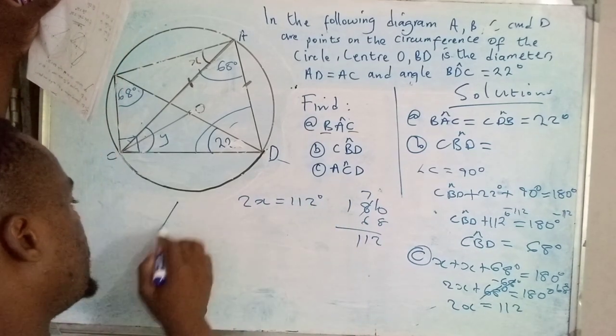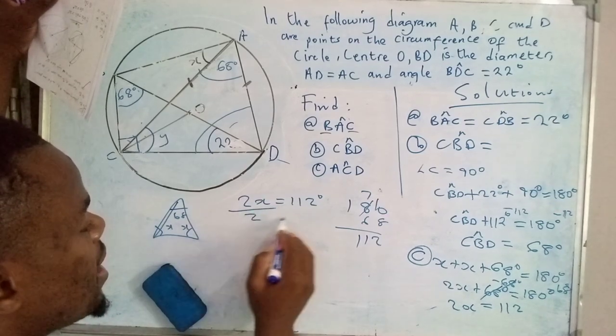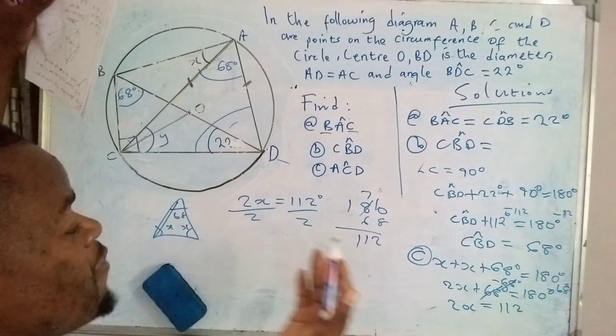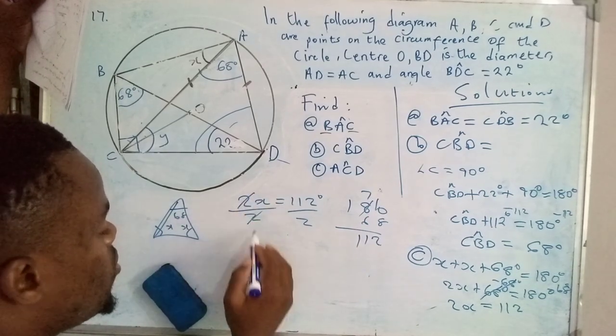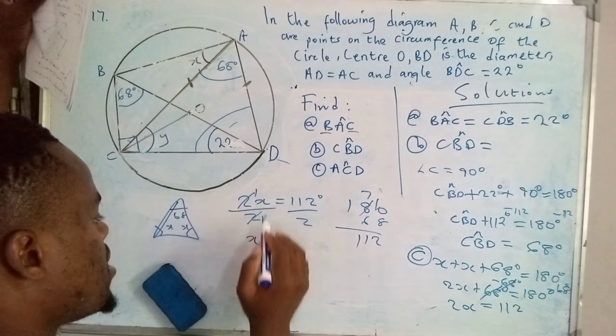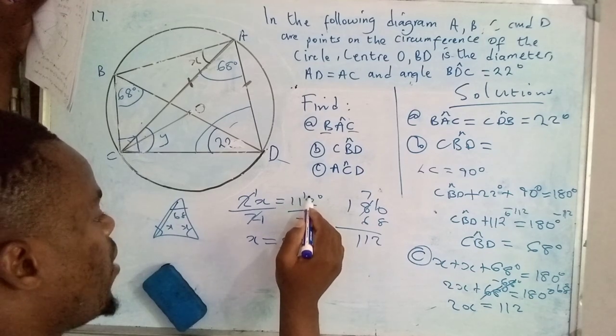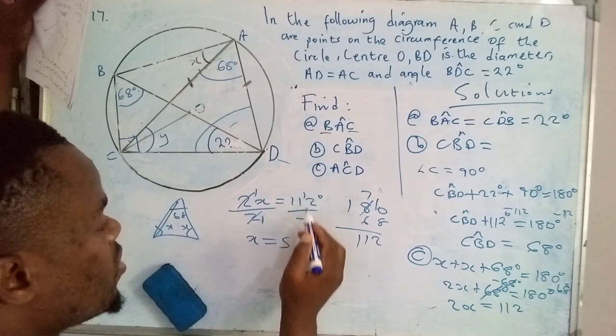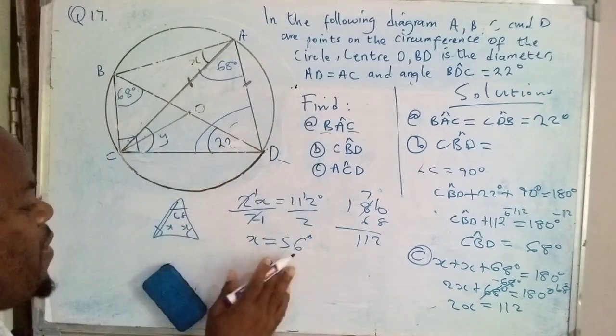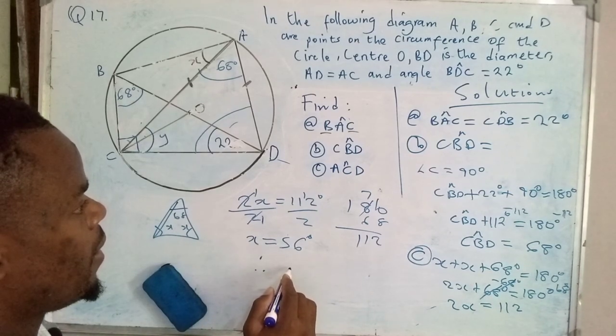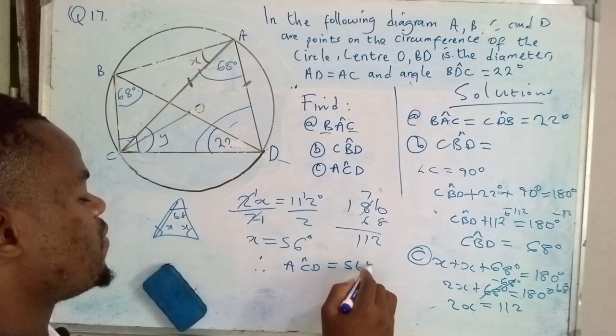So 2X equals 112 degrees. Our interest is to find the value of X. How do we go about this? We have to divide both sides by 2. So this 2 and that 2 cancel: 1 times X is X. 2 into 11 is 5, remainder 1. 2 into 12, when you add that 1 to 2 that's 3, so 2 into 12 is 6. So that is 56 degrees. Therefore, the angle here, which is ACD, is equal to 56 degrees.